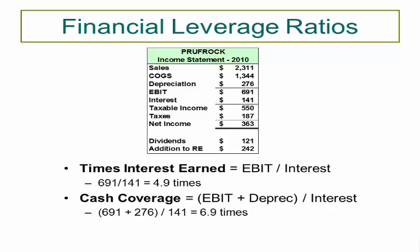Cash coverage is a similar idea, but instead of earnings before interest and taxes, you use EBITDA—earnings before interest, taxes, depreciation, and amortization. So it's EBIT plus depreciation over interest. It adds depreciation back because it was taken out of EBIT, giving us an accurate look at all cash flows. You do EBITDA over interest—or EBIT plus depreciation over interest. In this case, that number jumps up by 2 to 6.9 times. The cash coverage may be a slightly more realistic number if you're wanting to talk about actual cash available.